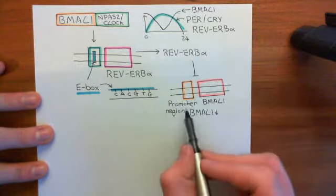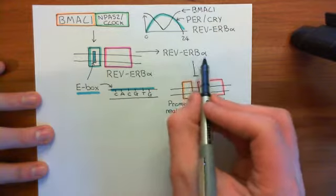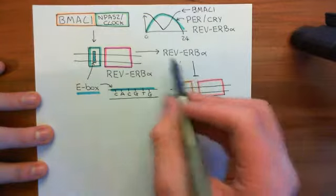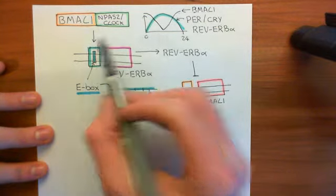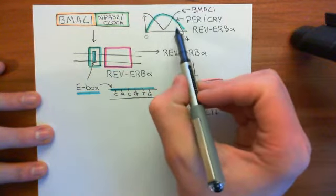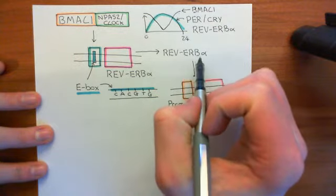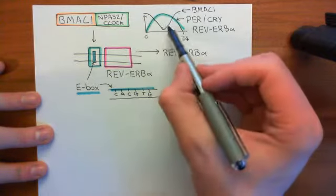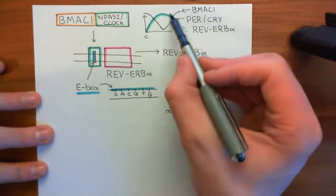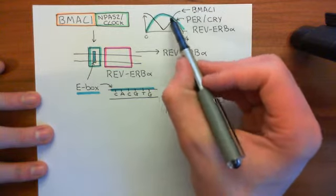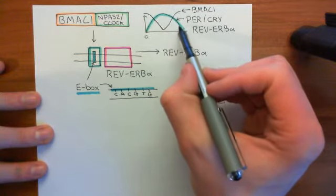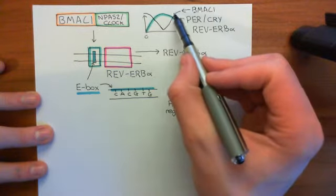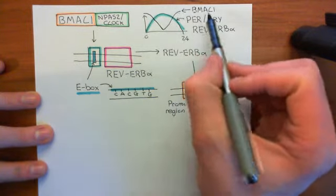Meanwhile, you're also going to get the fall in the levels of Rev-ERB-alpha, because the fall in the BMAL1 levels means that you're no longer going to be producing more Rev-ERB-alpha, so Rev-ERB-alpha will also come down. The fall in the level of Rev-ERB-alpha will then allow BMAL1 to be transcribed again, and therefore BMAL1 will go back up. So period, cryptochrome, and Rev-ERB-alpha will all crash down, whilst BMAL1 will come back up, and then we're ready to repeat the cycle again.